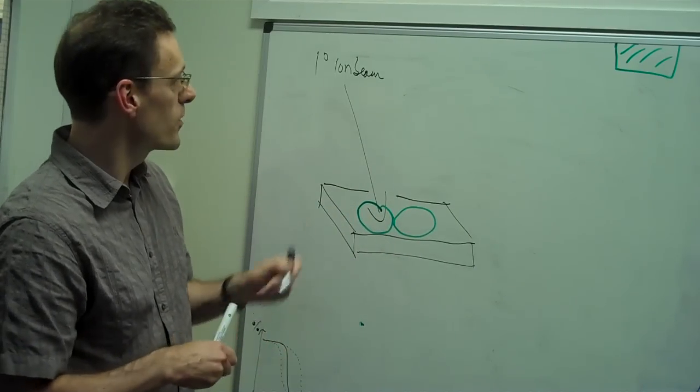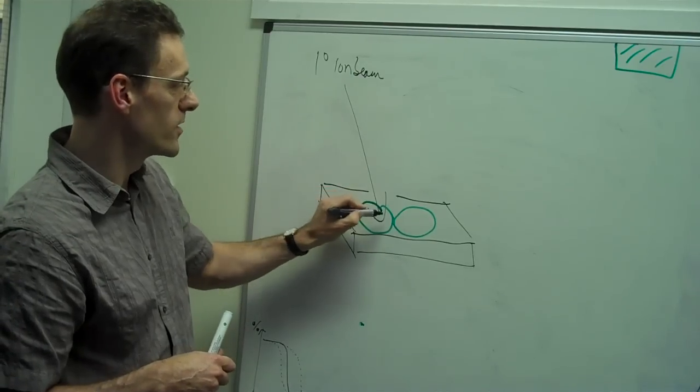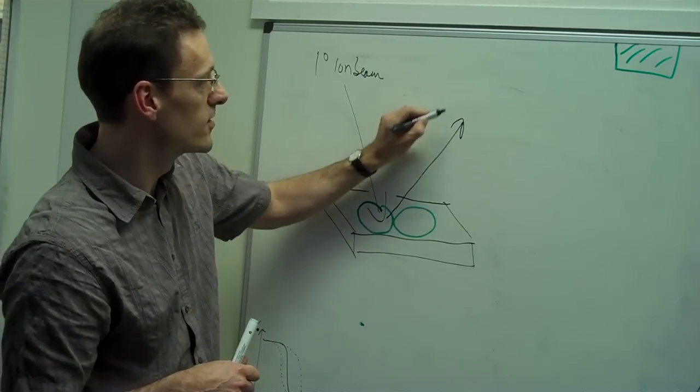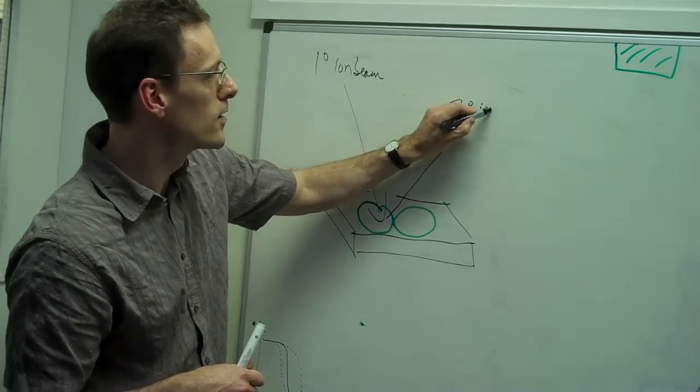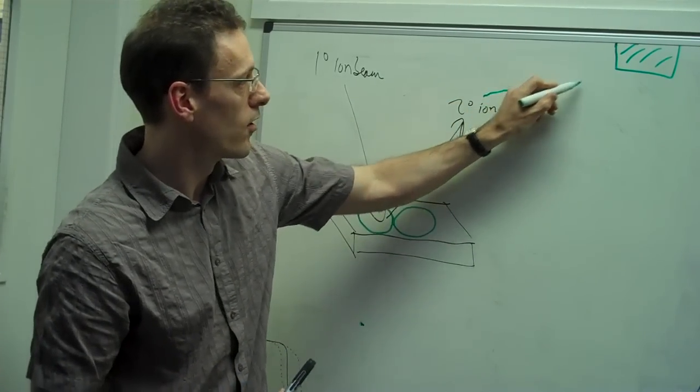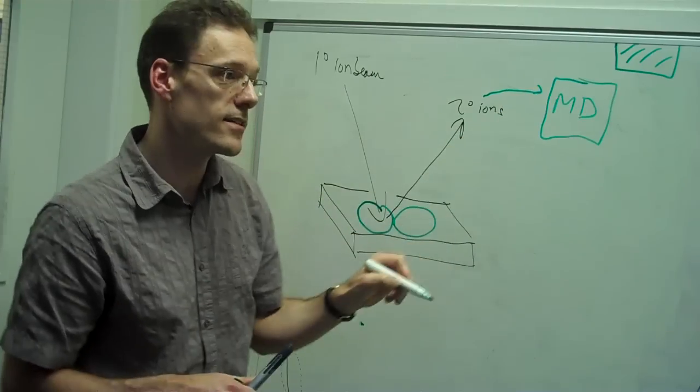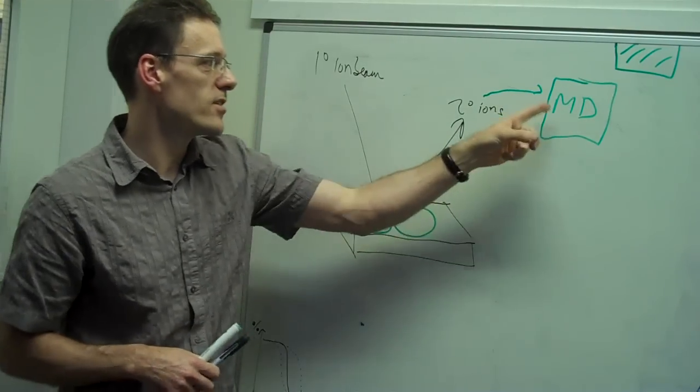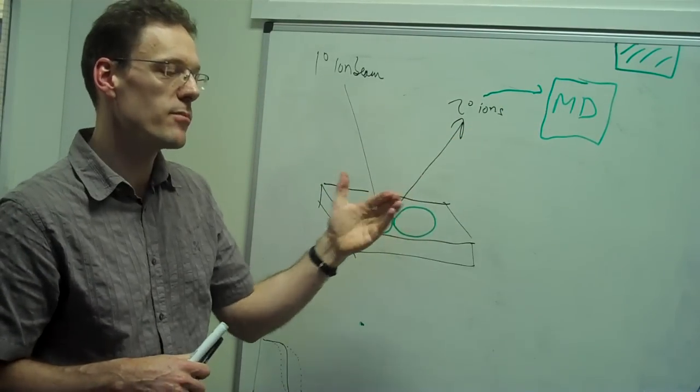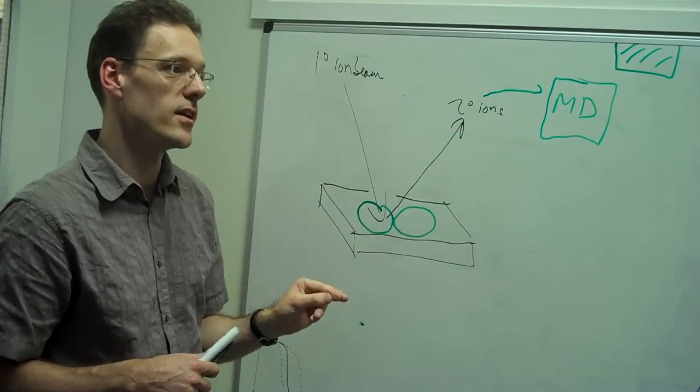In response to irradiation by this primary ion beam we have secondary ions which are released. These secondary ions can then be focused onto a mass detector. As the name suggests, the mass detector gives us information about the molecular weight and the charge of the ions which are released.